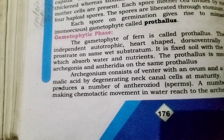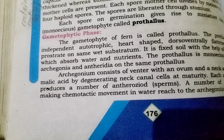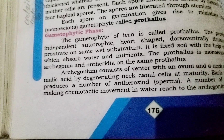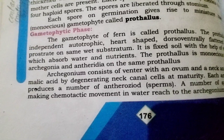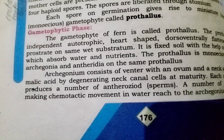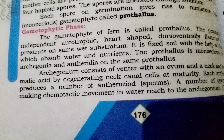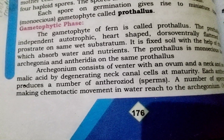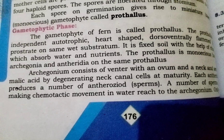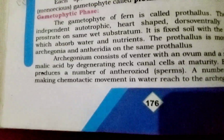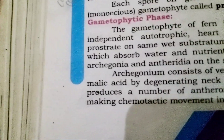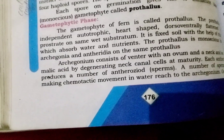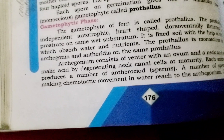The prothallus is heart-shaped, autotrophic, dorso-ventrally flattened, and independent. It is fixed by rhizoids. The prothallus is monoecious, having archegonium and antheridium on the same prothallus, meaning both reproductive structures are borne on a single prothallus.